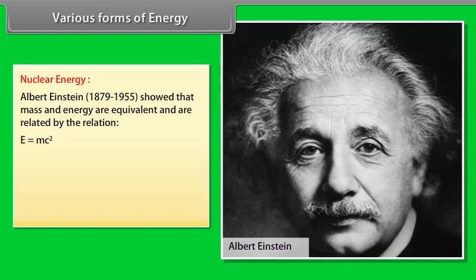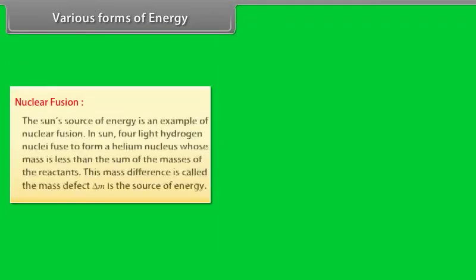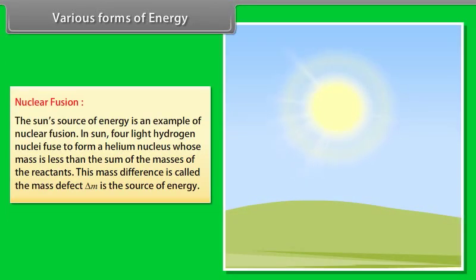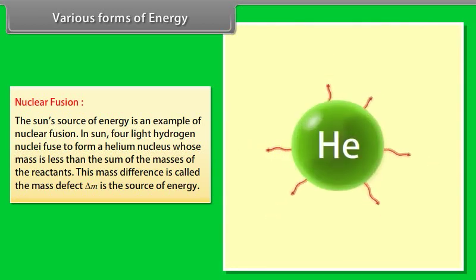Nuclear energy: Albert Einstein (1879-1955) showed that mass and energy are equivalent and are related by the relation E is equal to mc square, where C is the speed of light in vacuum. There are two types of nuclear reactions. They are nuclear fusion and nuclear fission reactions. Nuclear fusion: The sun's source of energy is an example of nuclear fusion. In sun, 4 light hydrogen nuclei fuse to form a helium nucleus whose mass is less than the sum of the masses of the reactants. This mass difference is called the mass defect. Delta m is the source of energy.